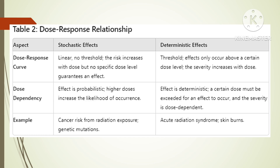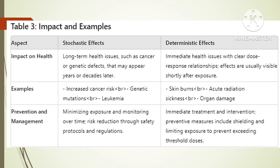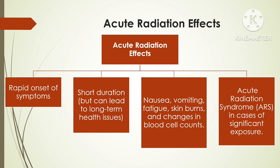In summary: stochastic effects are effects that occur by chance and have no threshold dose — probability increases with dose but severity is not dose dependent. Deterministic effects have a threshold dose, severity of effect also increases with dose, and there is a clear relationship between dose and severity. Radiation cancers are an example of stochastic effects, while skin burns and acute radiation effects are examples of deterministic effects.